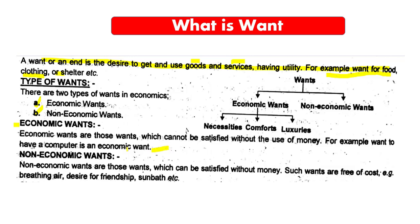For example, let's suppose that we can't afford a computer. We can't afford to have a good job, so we can't afford to meet that want. This is an economic want — something that requires money to be satisfied.